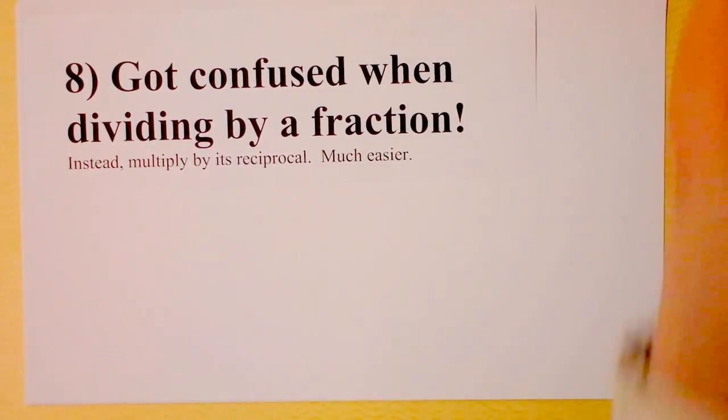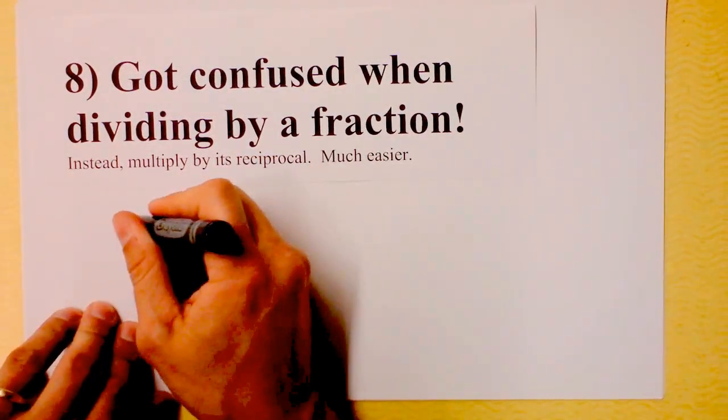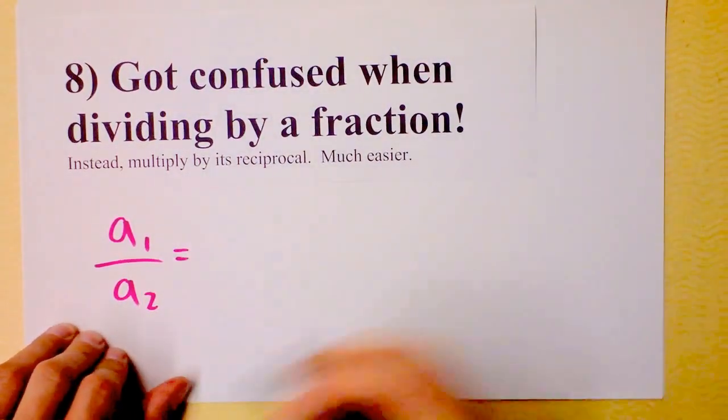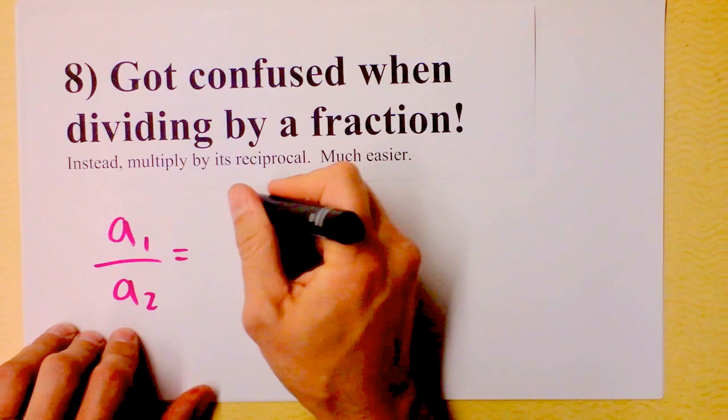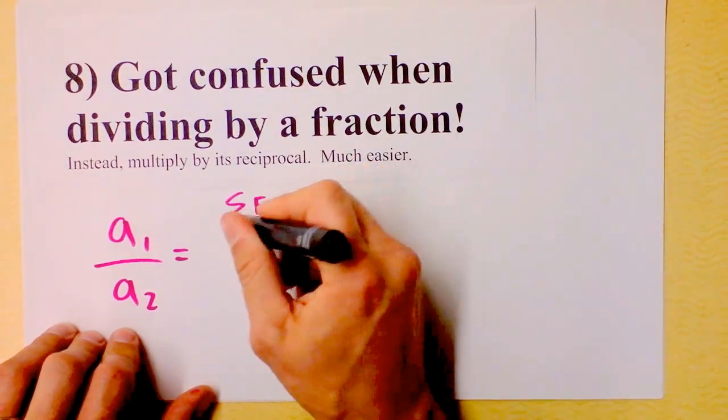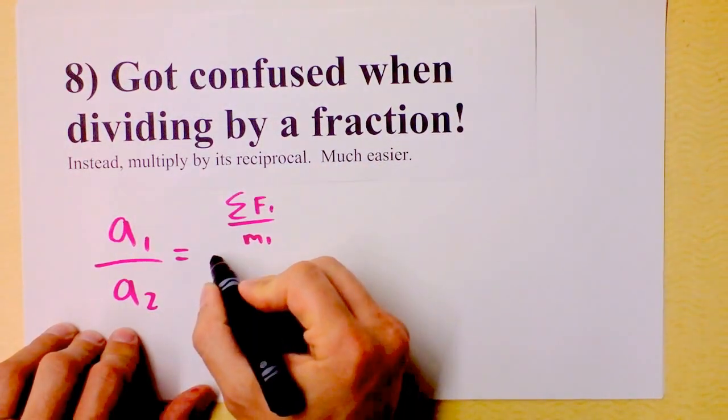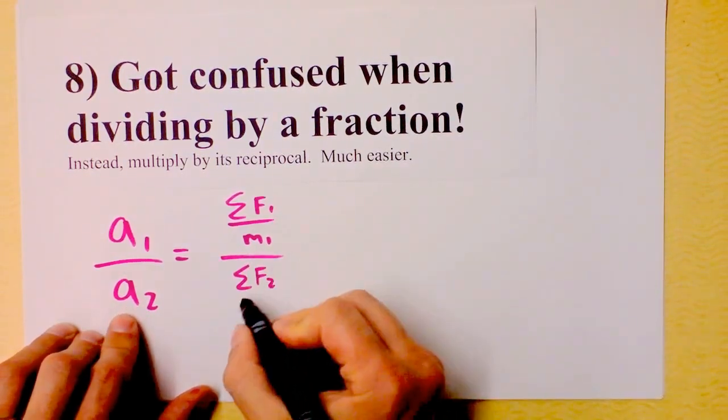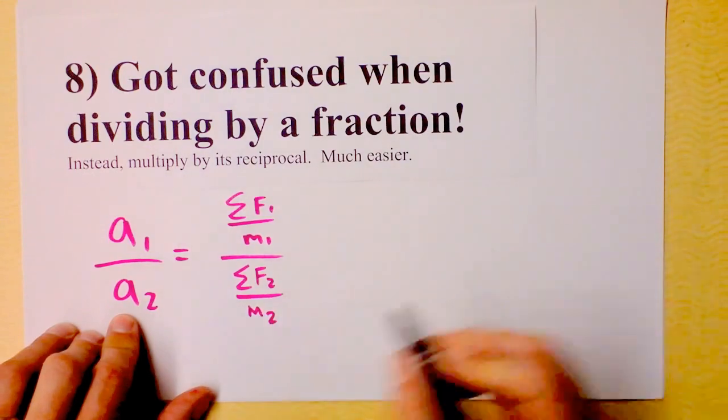Sometimes you might find yourself doing a calculation like acceleration 1 divided by acceleration 2, and you'll have to plug in some stuff. Acceleration 1 is net force 1 divided by mass 1, and then there's this other fraction down in the denominator which is net force 2 divided by mass 2.